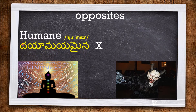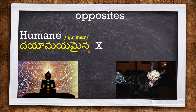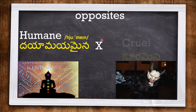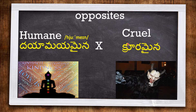The next word is HUMANE, meaning containing the qualities of a human being — compassionate. Gautam Buddha was a man of humane qualities. The opposite of humane is CRUEL. This man is looking so cruel.